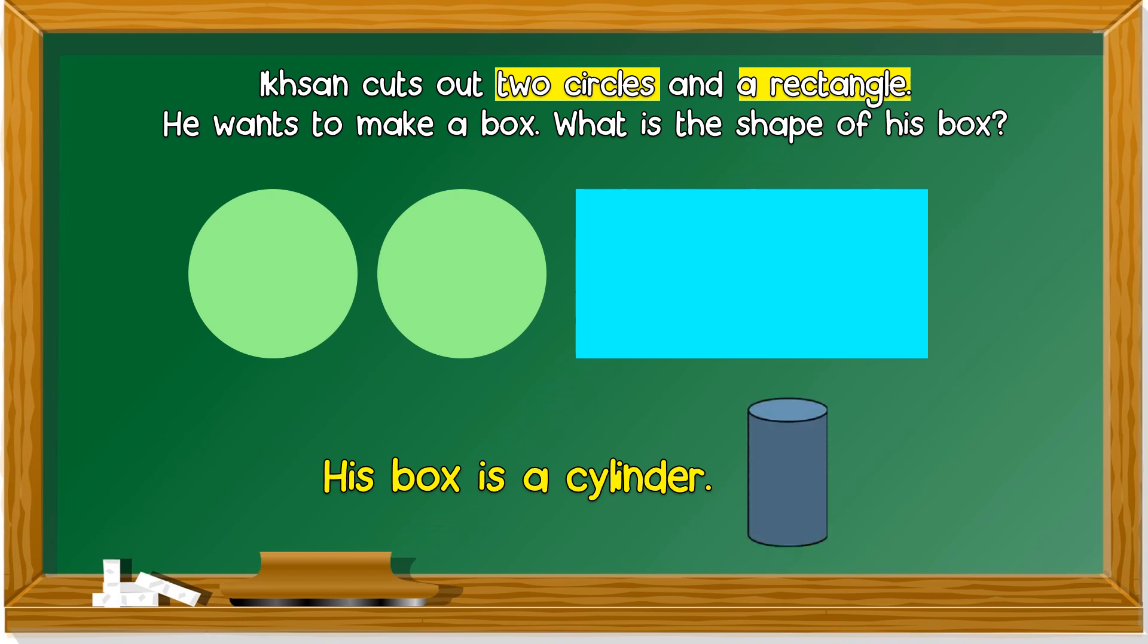Can you see the 2 circles? One is up here, one is at the bottom. And there's the rectangle for the curved surface. Remember, we have learned the net. When you fold the rectangle into the circle, it becomes a cylinder.